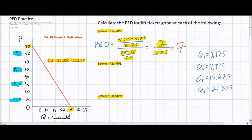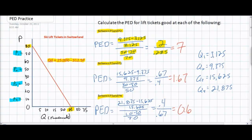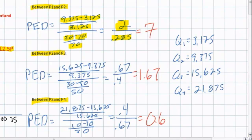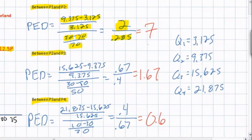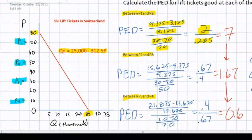To calculate the price elasticities of demand between 50 francs and 30 francs, and between 30 francs and 10 francs, we apply the same method using Q3 and Q2, and then Q4 and Q3, in combination with the corresponding prices. Here we've calculated those PED values. As we can see, as the price of ski lift tickets falls from 70 to 50, then 50 to 30, and finally 30 to 10 francs, the price elasticity of demand falls. This is interesting because the demand curve is clearly linear, meaning the slope is constant. However, consumers become less and less responsive to further price decreases.